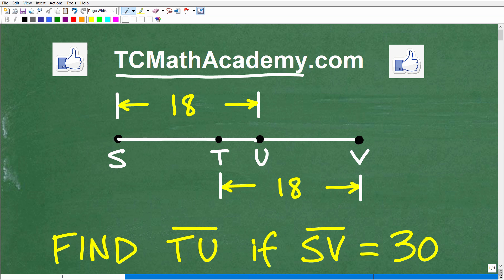So here we have a line segment, and we have the points S, T, U, and V. We're told that from S to U, that's 18 units, and from T to V, that is 18 units. And the question is, we want to find the distance between T and U, so this distance right here, given that SV, the distance from S to V, is 30 units.